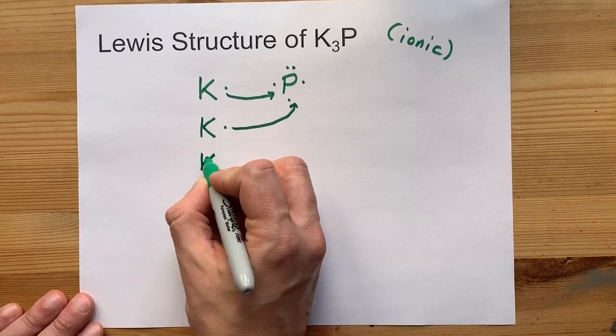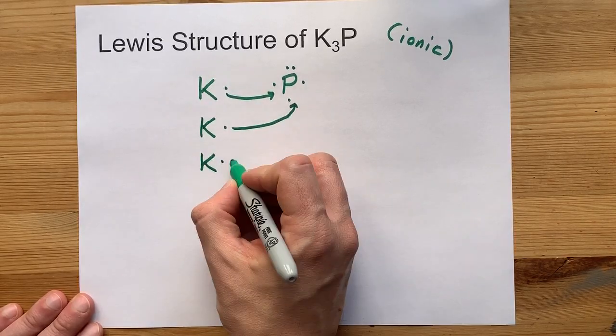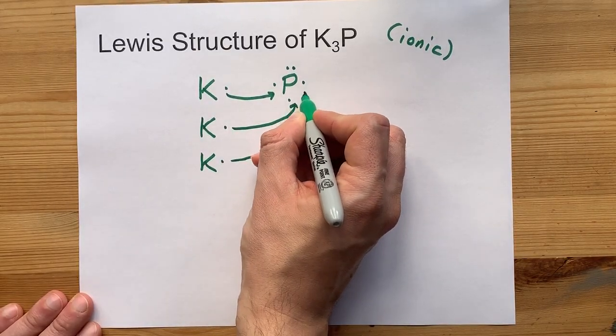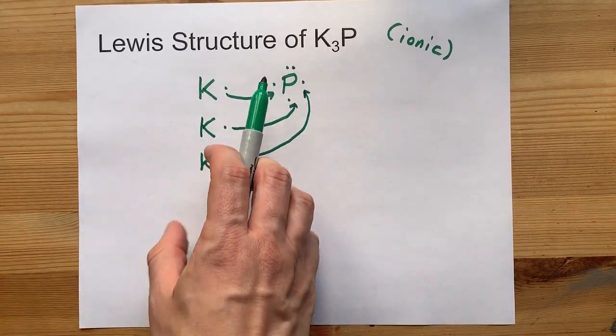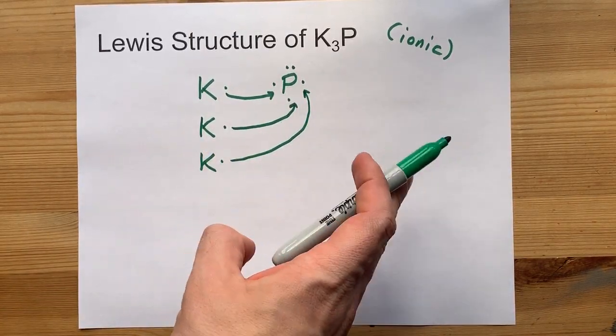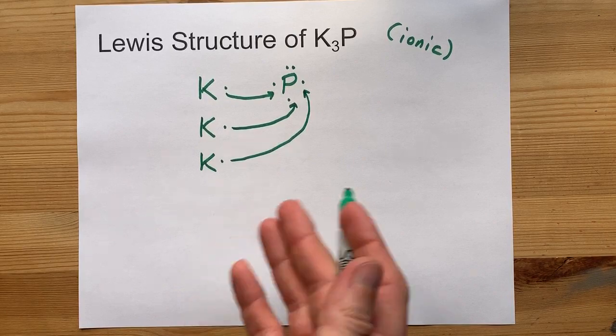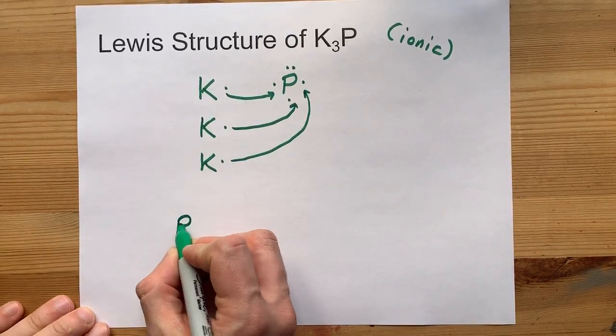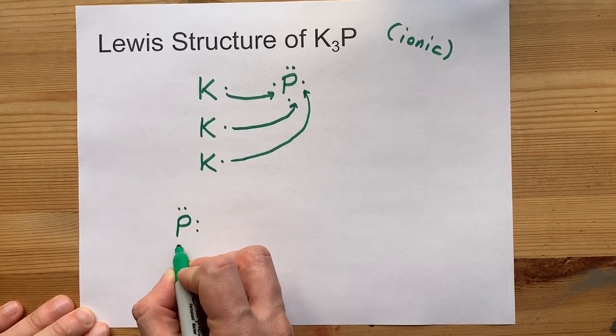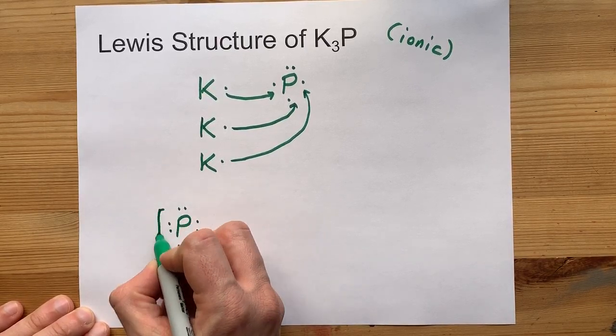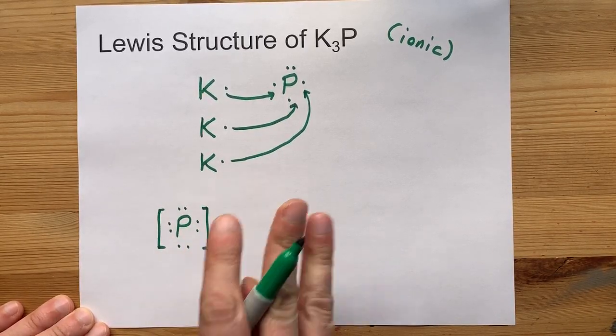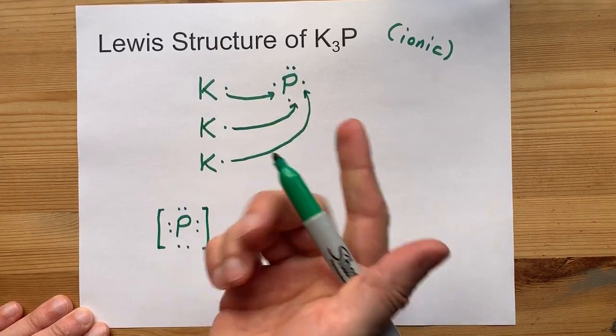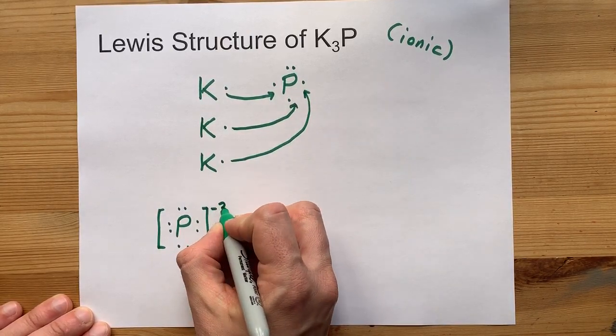We're going to need a third potassium atom to give away its outer electron. Now phosphorus has eight valence electrons. Well eight electrons in its outer shell. Let's draw that, a phosphorus with a full eight electrons in its outer shell. That's three more than it started with. That means the charge is minus three.